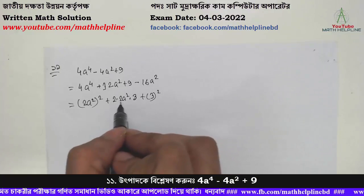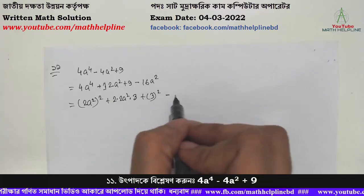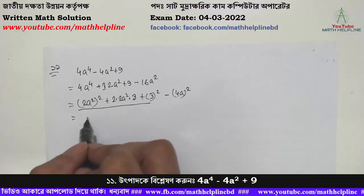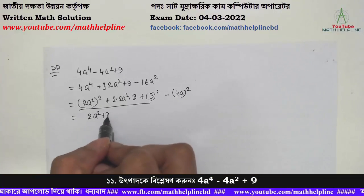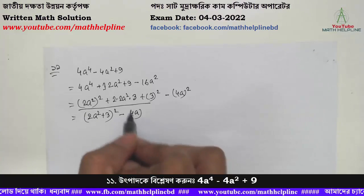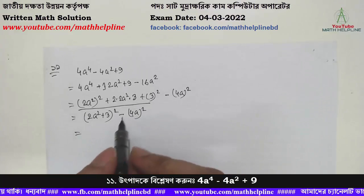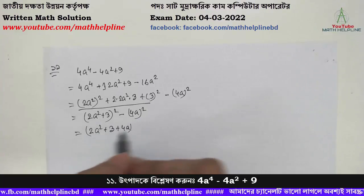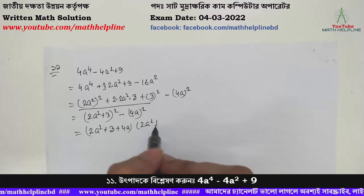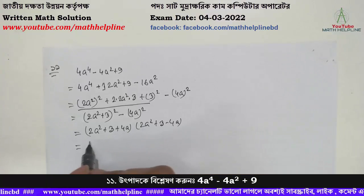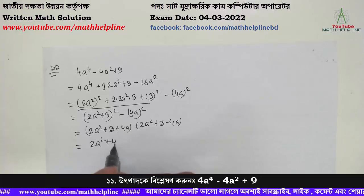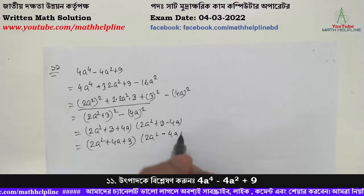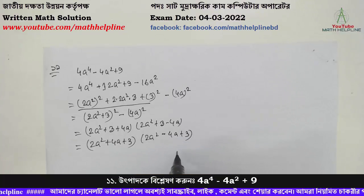And then we have the formula: minus 4a whole square. So we have 2 s square plus 3 whole square minus 4a whole square, equal to 2 s square plus 3 plus 4a, into 2 s square plus 3 minus 4a, equal to 2 s square plus 4a plus 3, times 2 s square minus 4a plus 3.